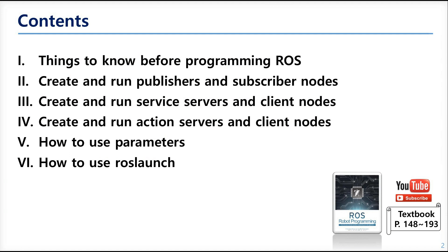There are three kinds of communication in ROS. First is the topic communication. Second is the service communication. And the third is the action communication. What we are going to make in this chapter are the package for topic and the service communication. Because the action is not often used, we'll also learn how to use the parameter and the ROS launch.